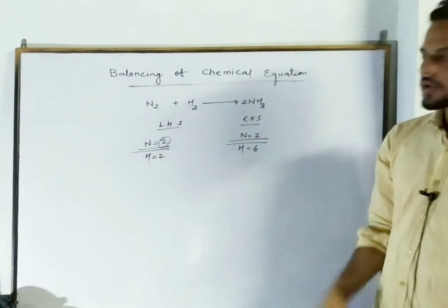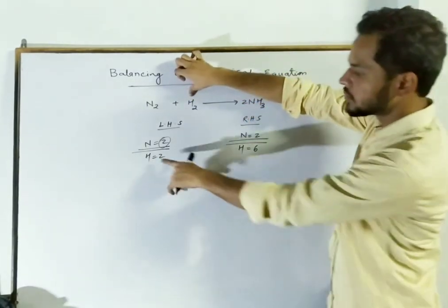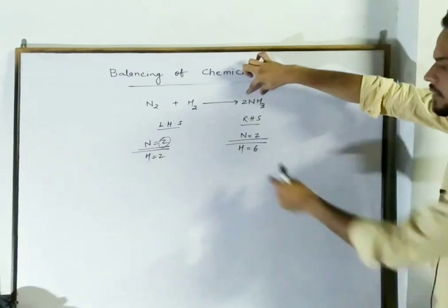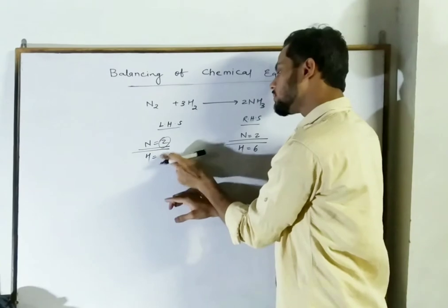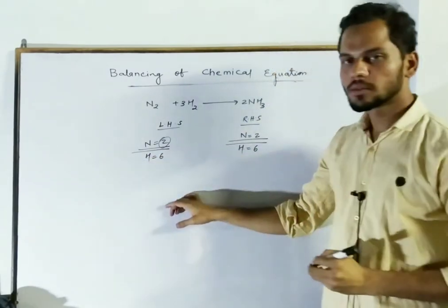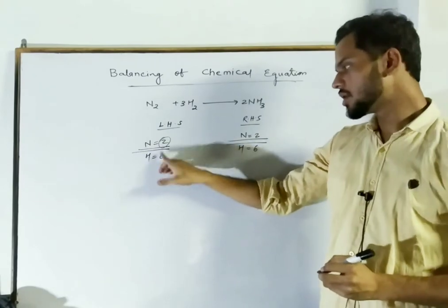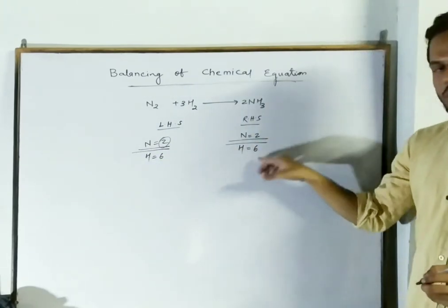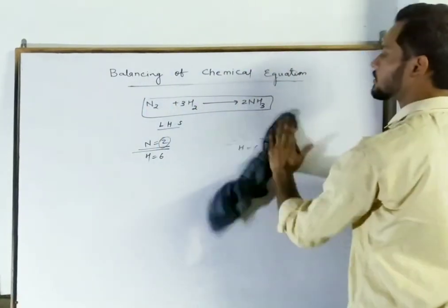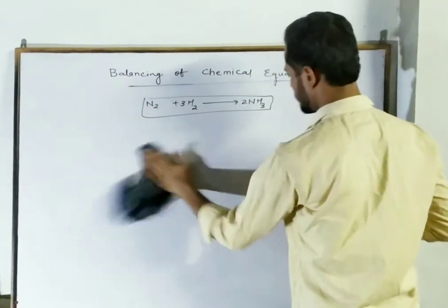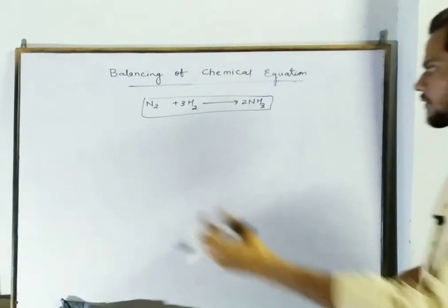Now nitrogen is balanced. For hydrogen, in LHS we have 2 hydrogen and in RHS we have 6 hydrogen, so LHS should be multiplied by 3, making hydrogen 6 on both sides. Now both nitrogen and hydrogen are balanced: nitrogen is 2 on both sides and hydrogen is 6 on both sides. So this reaction is now a balanced chemical equation.